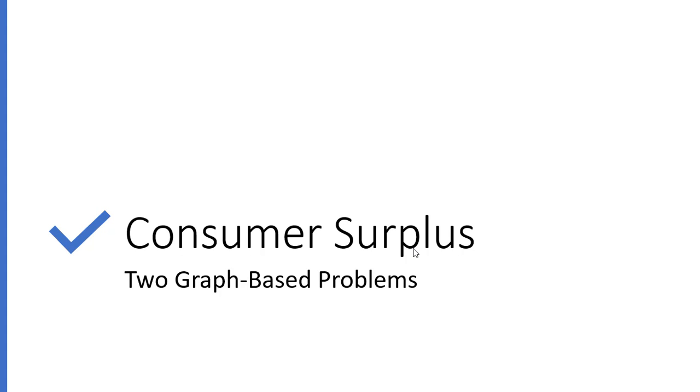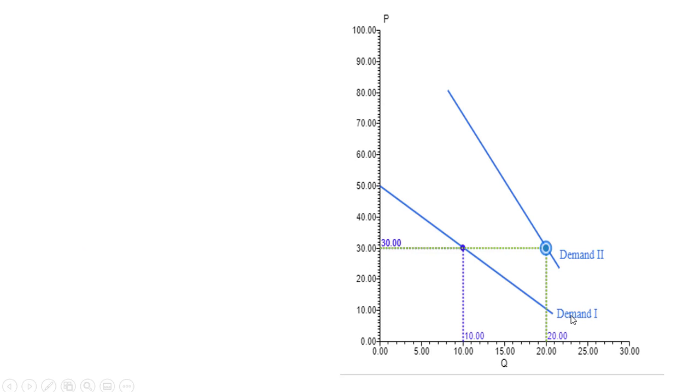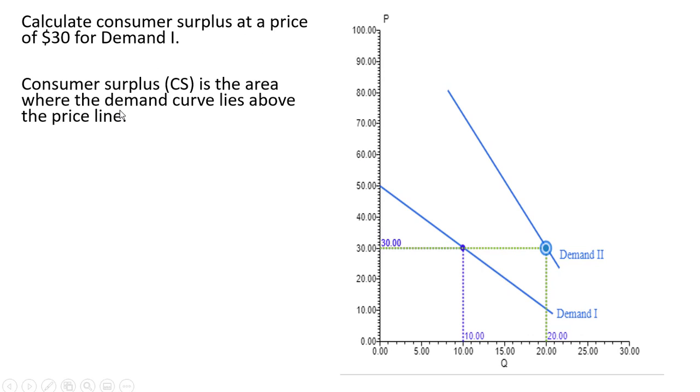Hello, in this video we're going to do two graph-based problems that deal with consumer surplus. Here we have two demands, Demand 1 and Demand 2. We want to calculate consumer surplus at a price of $30 for Demand 1. Consumer surplus is the area where the demand curve lies above the price line.